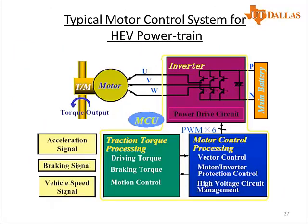We need high power density and high current density systems because there is a limited amount of space available in automobiles to mount all the power conversion electronics. Even the electric motors have to fit within a compartment of a vehicle — under the hood or in the trunk wherever they need to go. In hybrid and electric vehicles we also need to find space for the battery. This diagram illustrates how the power electronics is put together in a hybrid vehicle motor control system.